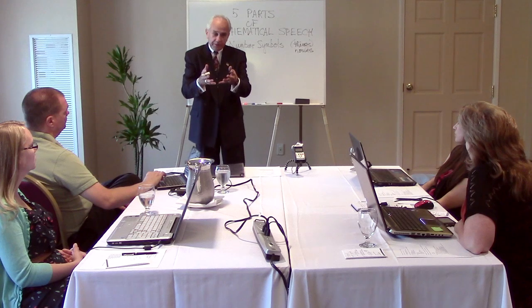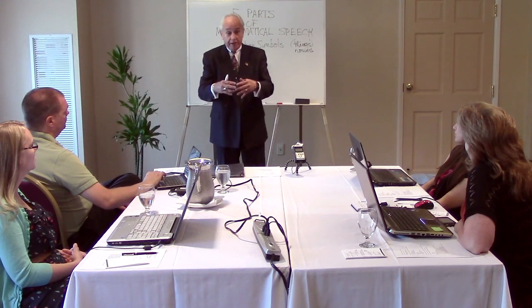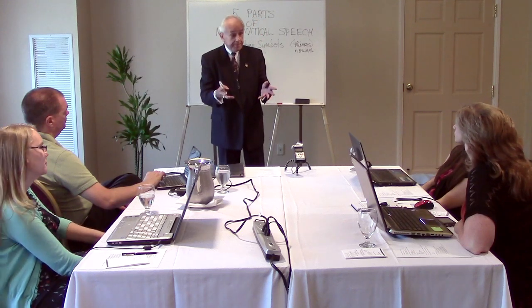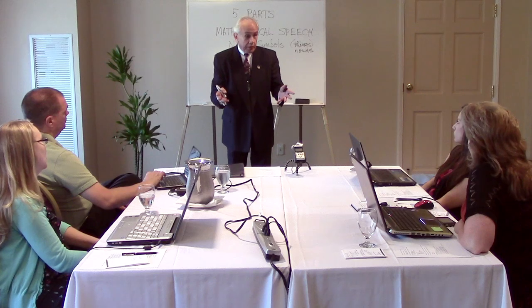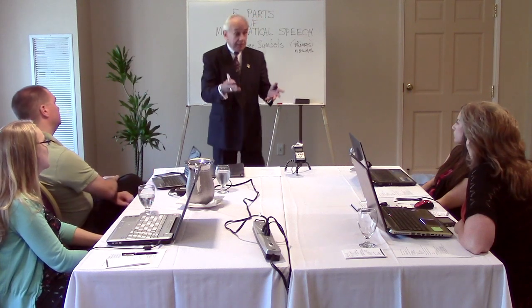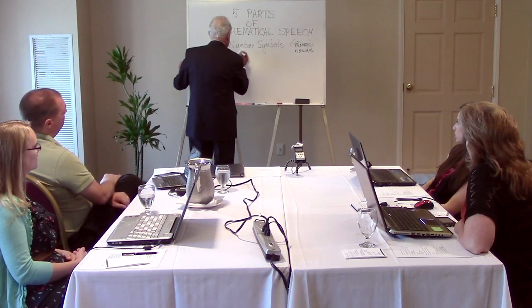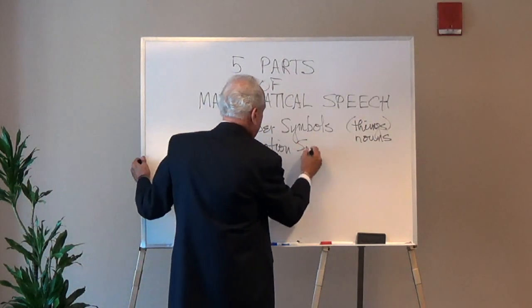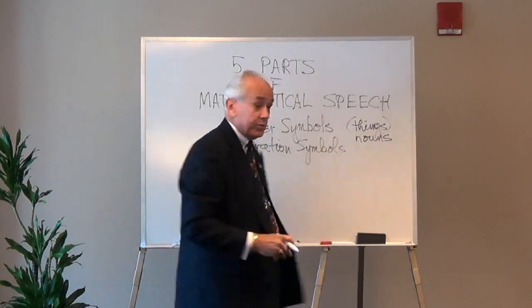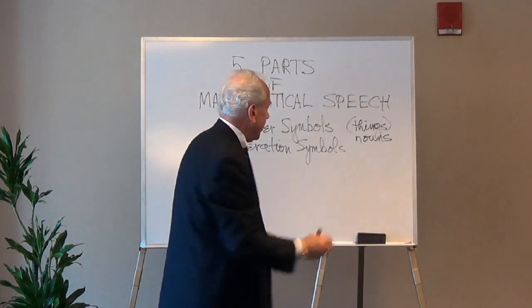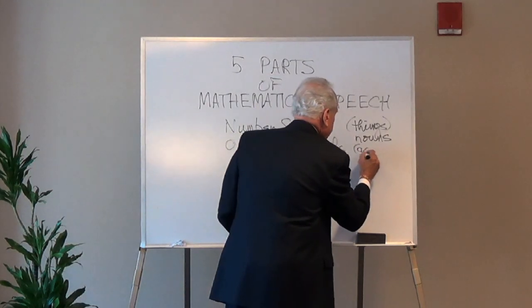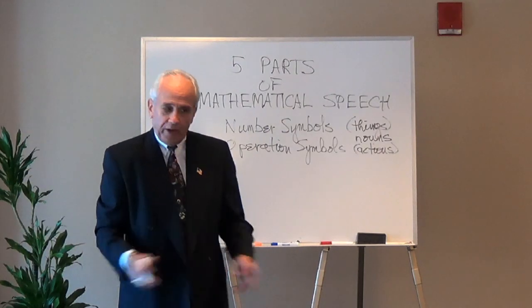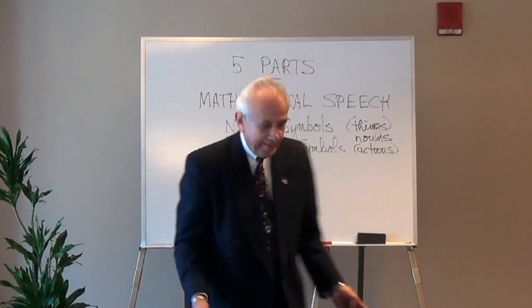Now you have your numbers. What do you suspect would be the next type of symbol that would become important — maybe necessary? You have a 3 and a 4 — what kind of symbol? Something to do with them, right? An operation symbol. We're familiar with those: add, subtract, multiply, divide. These are the actions of mathematics. We're talking about verbs.